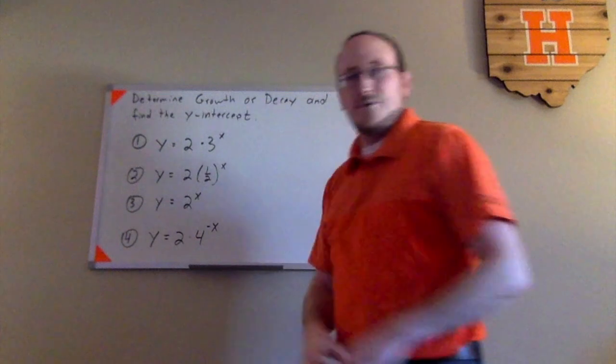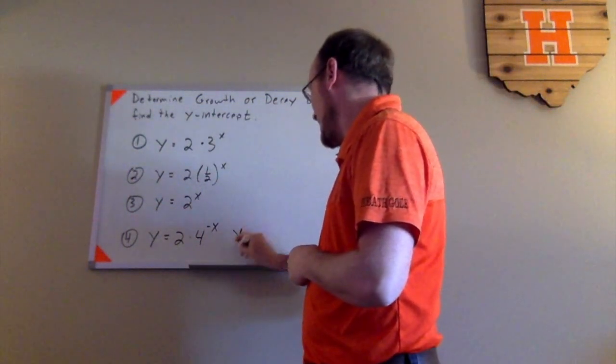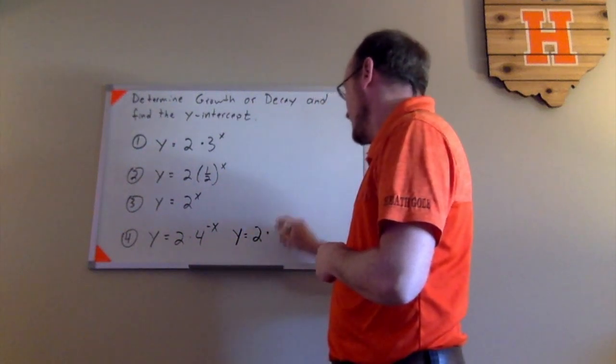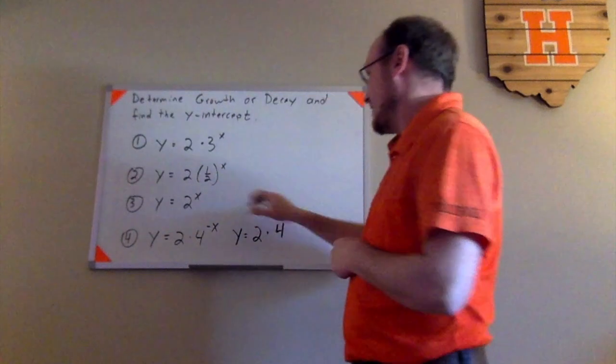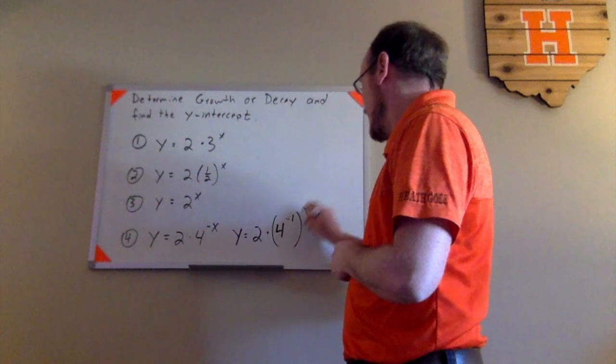I could actually rewrite this as y equals 2 times 4 to the negative 1 to the x. Remember your exponent rules from Algebra 1. If you take something to a power to another power, you multiply their exponents.